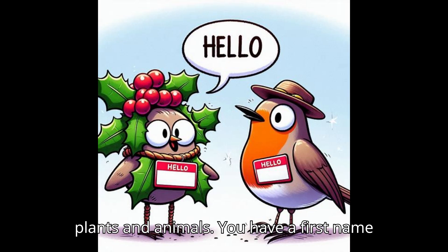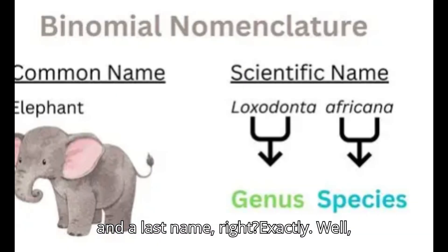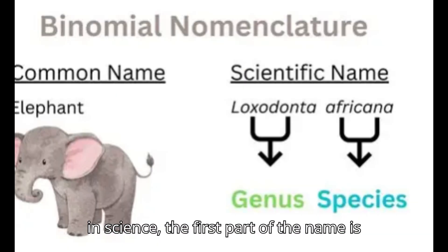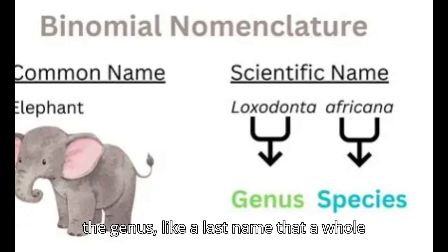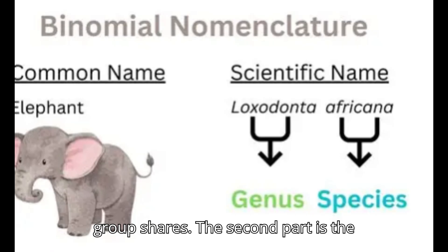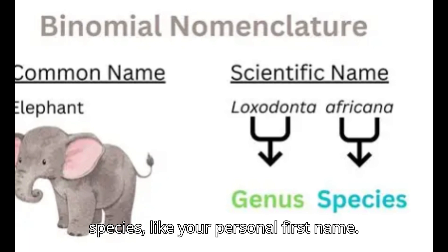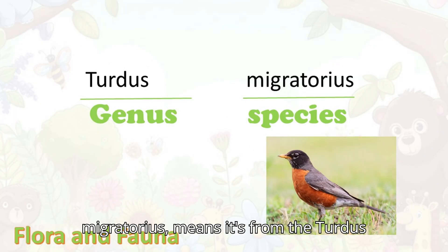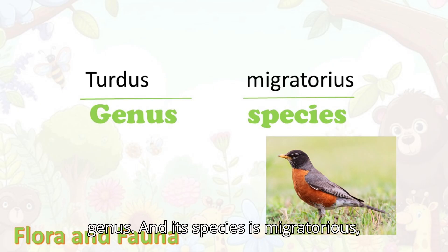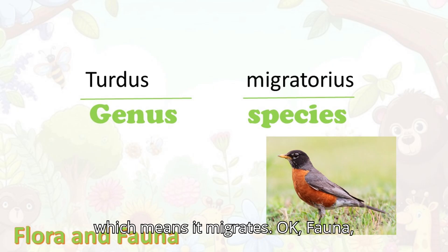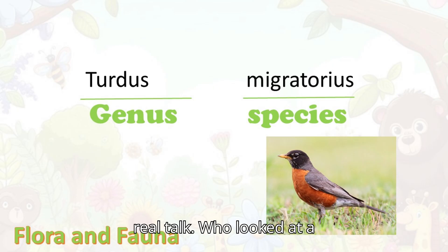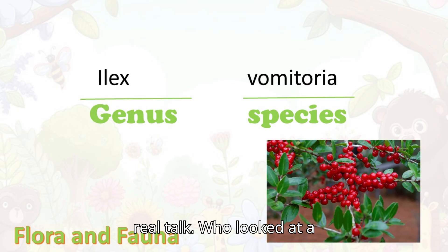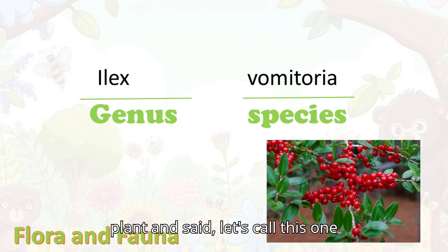You have a first name and a last name, right? Well, in science the first part of the name is the genus — like a last name that a whole group shares. The second part is the species, like your personal first name. So the American robin's name, Turdus migratorius, means it's from the Turdus genus, and its species is migratorius — which means it migrates.